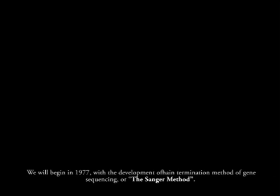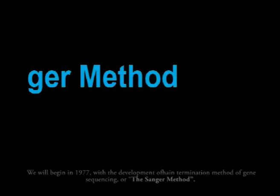In this segment, we will be discussing the three generations of gene sequencing technologies and the specifics on how a few different methods work. We will begin in 1977 with the development of the chain termination method of gene sequencing, or the Sanger method.